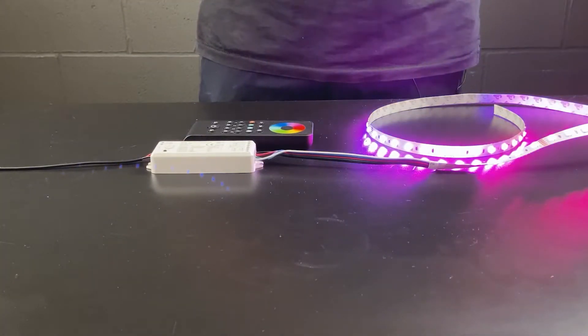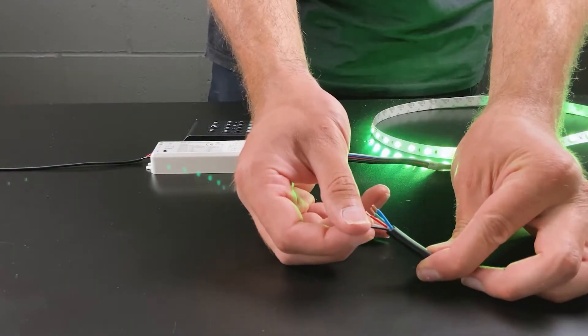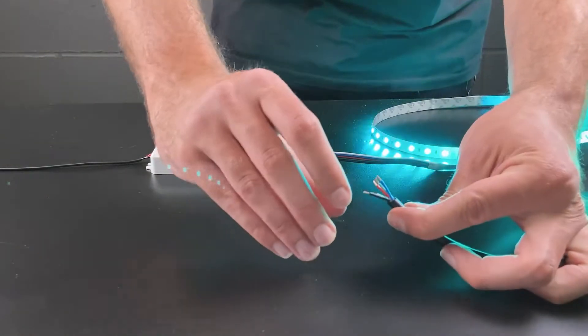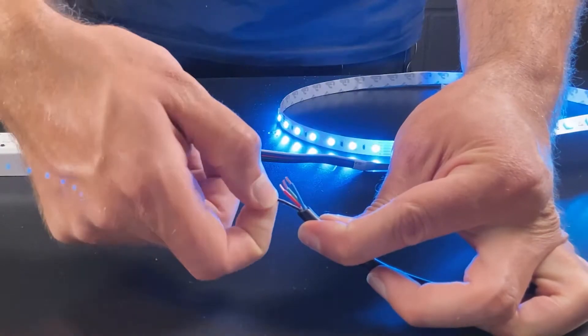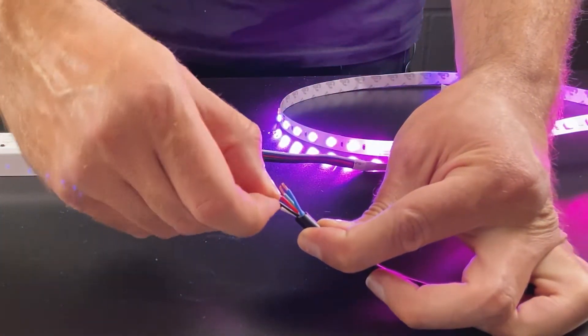For stripping any cable you want to strip back approximately 3mm off the end of the cable. It may also be useful to twist the ends and then to trim to ensure that no fraying of the cable occurs.